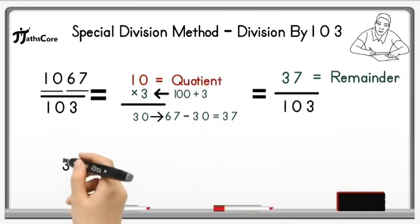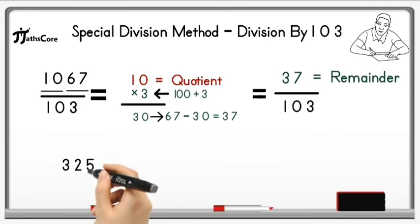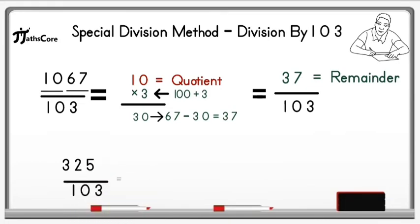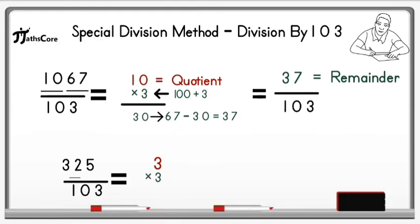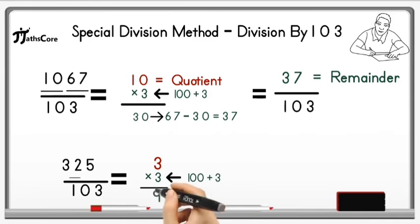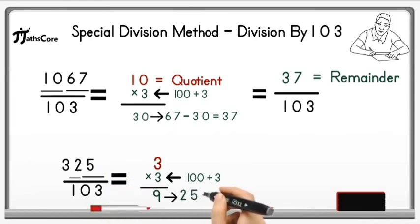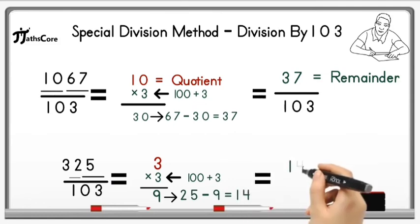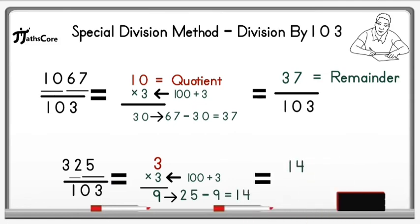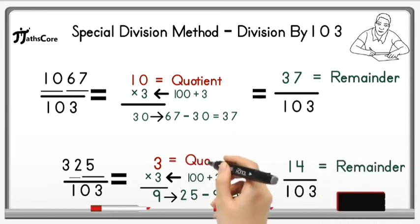The second example is 325 divided by 103. Write down 100 plus digit 3 here and multiply it by 3, because if we add 3 to 100 we get 103. So 3 multiplied by 3 is equal to 9. Subtract this 9 from 25: 25 minus 9 is equal to 14. Divide 14 by 103 — it is not possible because 14 is less than 103. So 14 is the remainder and 3 is the quotient.